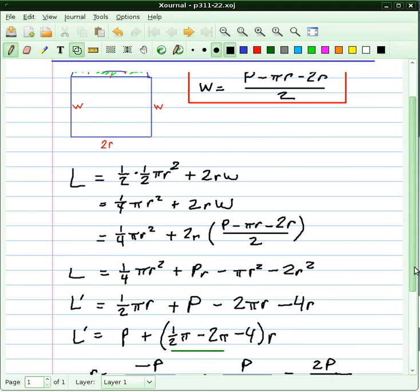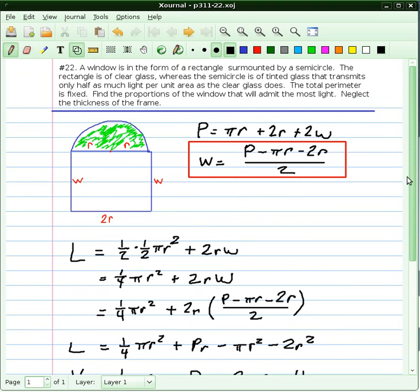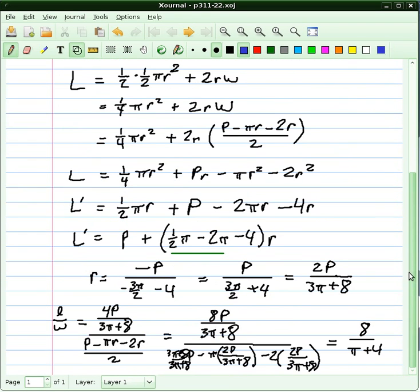And so that's the proportion of the window—that's the proportions of the window when you set that ratio equal to each other or when you make that fraction. That's the answer that we're looking for in that problem.